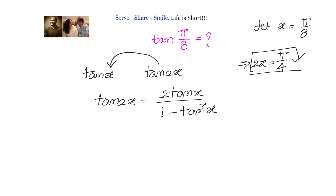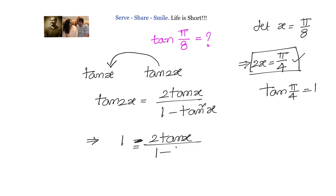tan(2x) is tan(π/4), and we know tan(π/4) = 1. So we write: 1 = 2·tan(x) / (1 − tan²(x)). Rearranging into quadratic form gives us: tan²(x) + 2·tan(x) − 1 = 0.